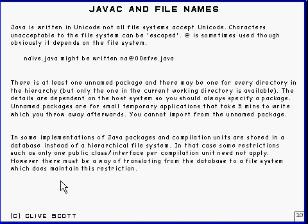In some implementations of Java, the Java packages in the compilation units are stored not in a file system but in a database instead of a hierarchical file system — or it could be a distributed database. In that case, some restrictions, such as only one public class or interface per compilation unit, don't necessarily apply.